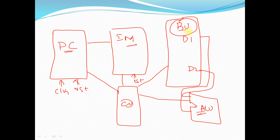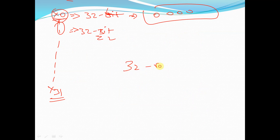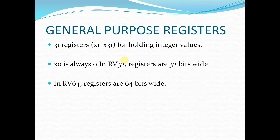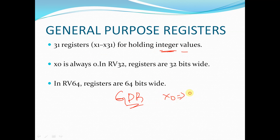In the register unit there will be a total of 32 registers. These are also called general purpose registers (GPR). There will be 31 registers for holding integer values. The first register, X0, will hold only zeros — it is hardcoded to zero. The remaining registers hold integer values.